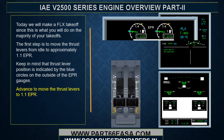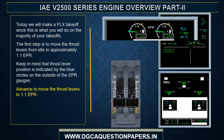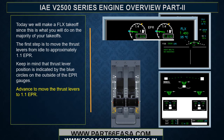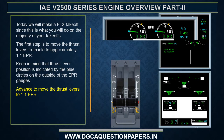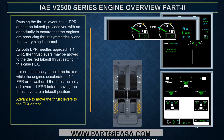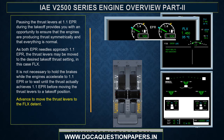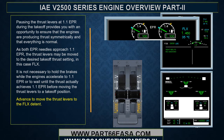We will make a flex takeoff. The first step is to move the thrust levers from idle to approximately 1.1 EPR. Keep in mind that thrust lever position is indicated by the blue circles on the outside of the EPR gauges. Pausing the thrust levers at 1.1 EPR during the takeoff provides an opportunity to ensure that the engines are producing thrust symmetrically and that everything is normal.